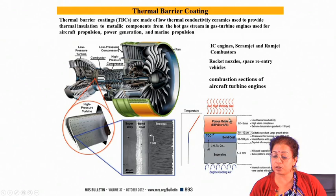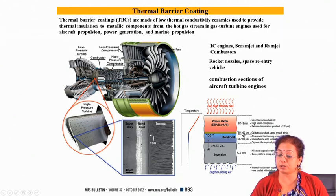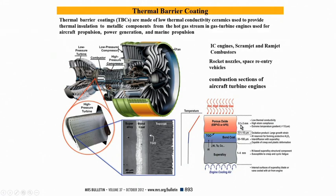If you see the temperature profile through the coating, you will find that the superalloy has a bond coat of thickness 30 to 100 microns. The top coat thickness is 100 to 3000 micrometers, and the TGO layer has a maximum thickness of 0.1 to 10 microns — this is nothing but oxidation product. Temperature decreases from the surface and is minimum at the bond coat and superalloy substrate.